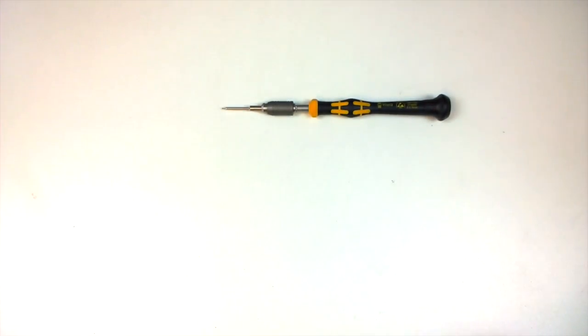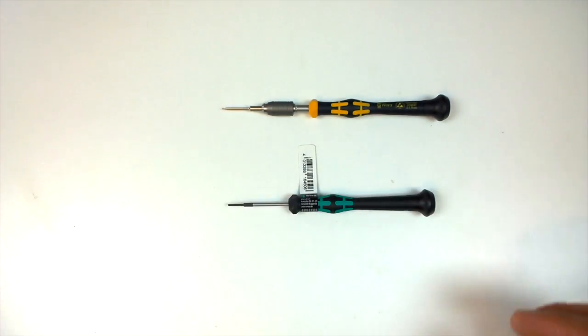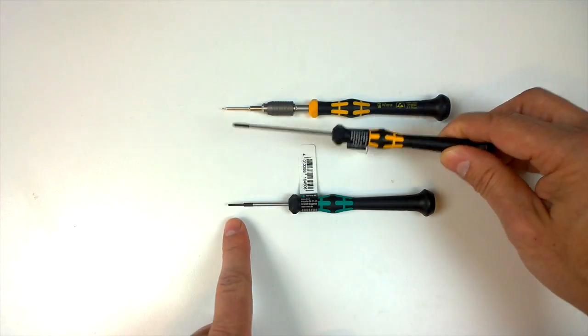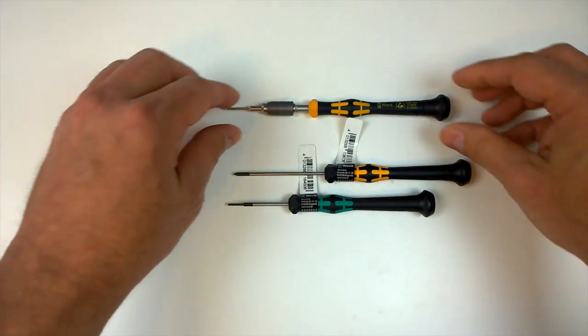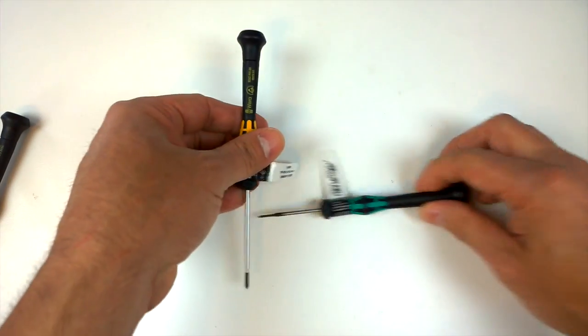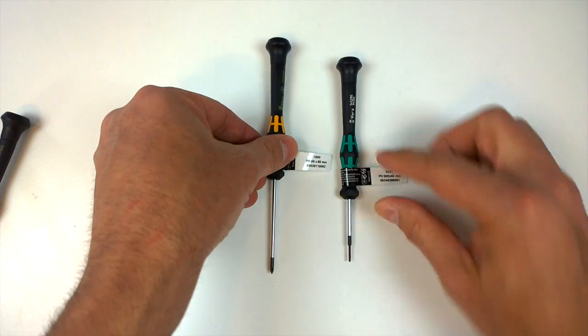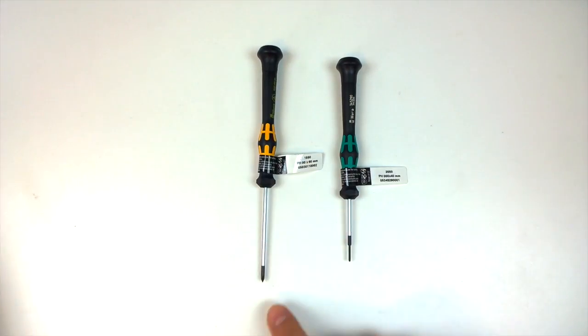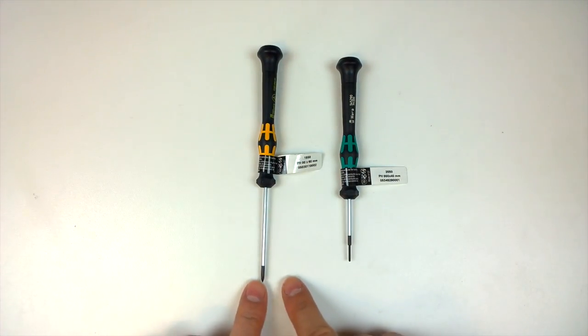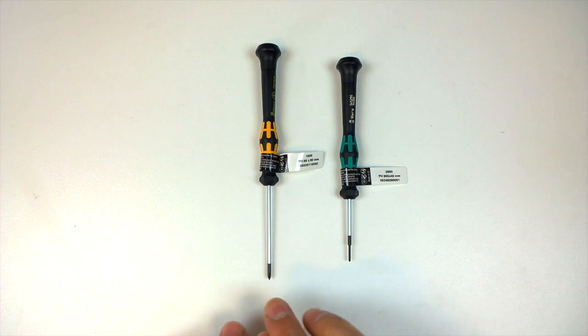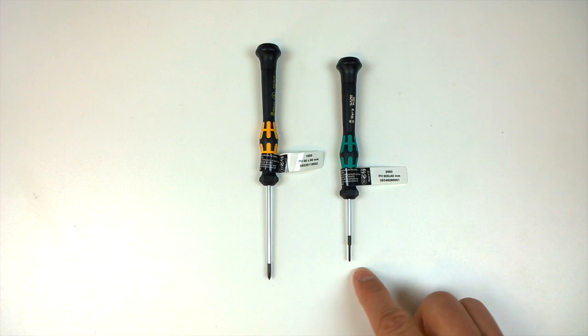Now, they do have a couple different styles when it comes to the Phillips. They've got the regular and they have the Japanese industrial standard. So if and when you go to order them, I do want to make sure that this is clear. If you go with the 1550 style, this is going to be a standard Phillips. That's a confusing term, isn't it? This is going to be a regular Phillips, I guess, pointed tip. This is going to be the flattened tip that is the Japanese industrial standard.